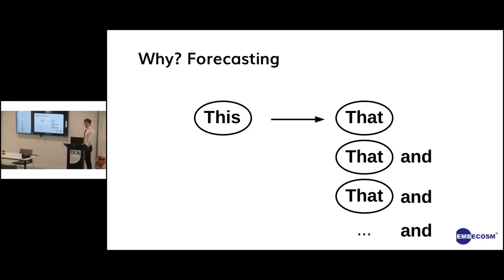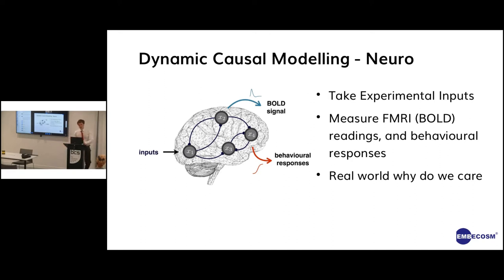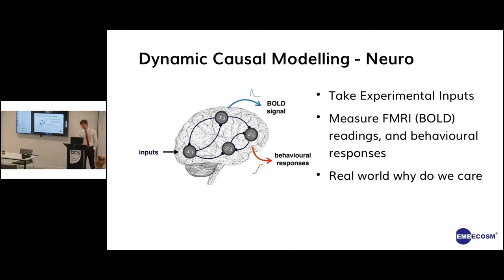Up until this point, as I've said, dynamic causal modeling has generally been applied in the neuroscience domain. The types of problems we're trying to solve there: we stick someone in an fMRI, do an experiment on them, get fMRI readings while they're doing that experiment, and then we're trying to infer connectivity and causality between different regions of the brain while that experiment is happening.